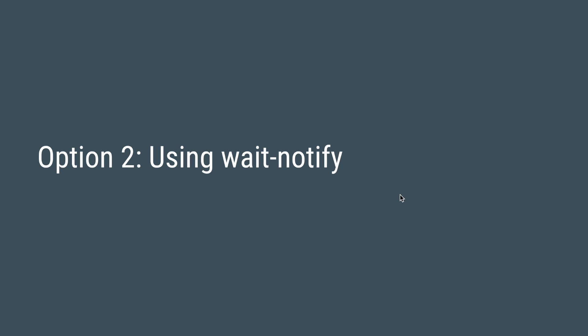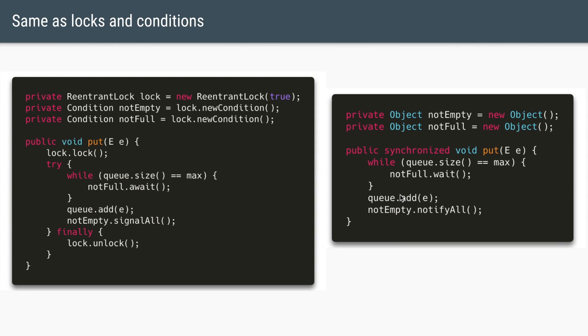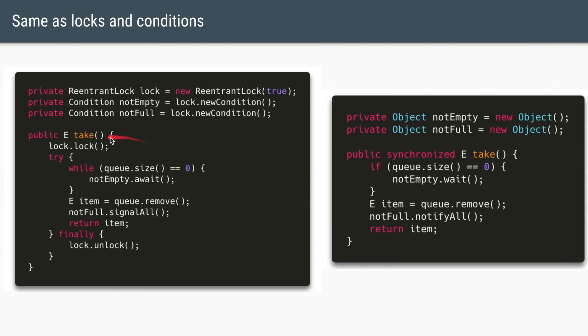The other option is to use wait and notify instead of locks and conditions. Once you understand locks and conditions, this is even simpler. Replace lock/unlock with the synchronized keyword; replace the notEmpty and notFull condition objects with plain objects — any object in Java has wait, notify, and notifyAll methods. Replace await with wait and signalAll with notifyAll. The same logic applies for the take method. The functionality of the whole code remains the same.